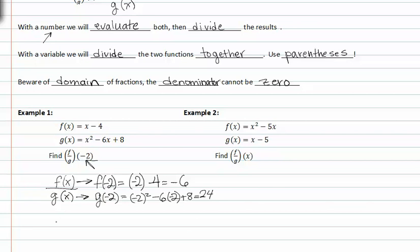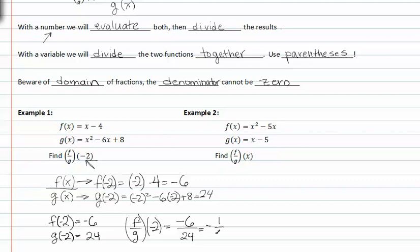Now that we know that f of negative two is negative six, and g of negative two is twenty-four, we can now divide to find f over g of negative two, which is equal to negative one-quarter.